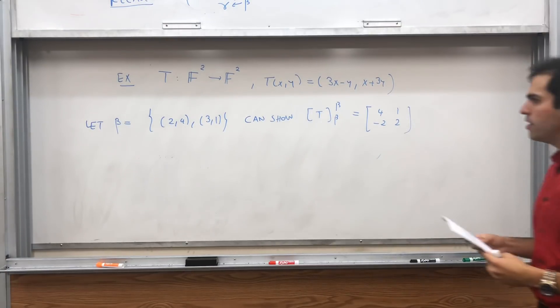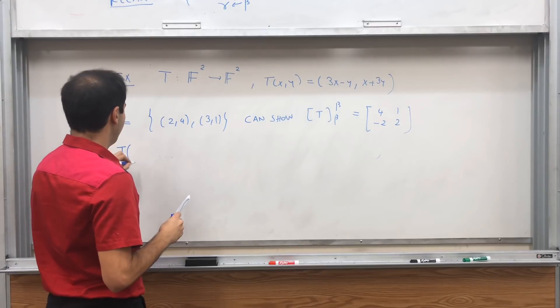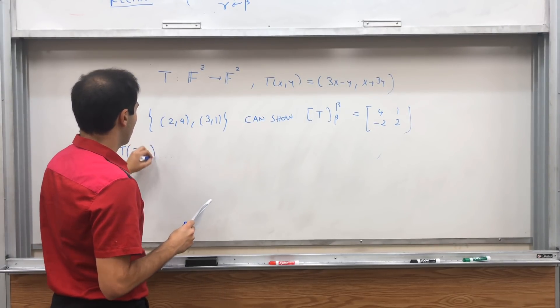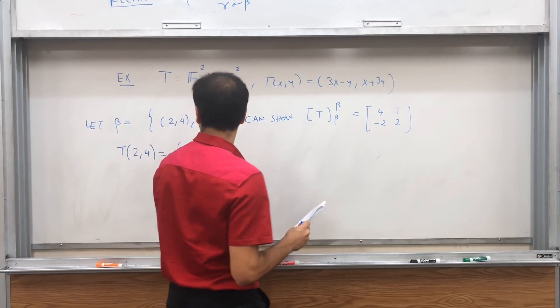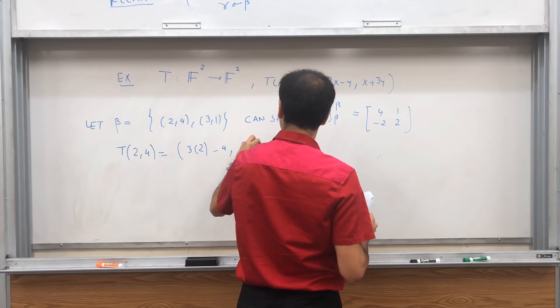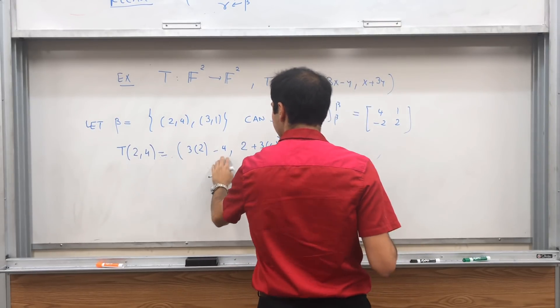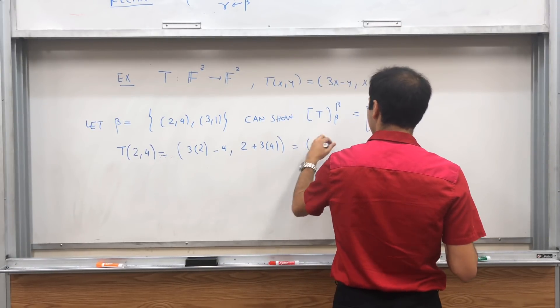If you want, let me illustrate, for example, how to get the first column. Well, if you apply T to the first vector (2,4), by definition it's 3 times 2 minus 4, and then 2 plus 3 times 4, and that's equal to 6 minus 4, that's 2, and then 2 plus 12, it's 14.